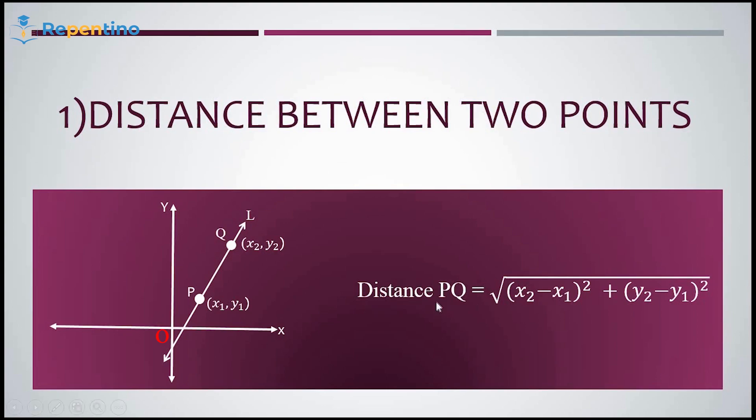The distance between two points P and Q is defined to be the square root of (x2 minus x1) whole square plus (y2 minus y1) whole square.